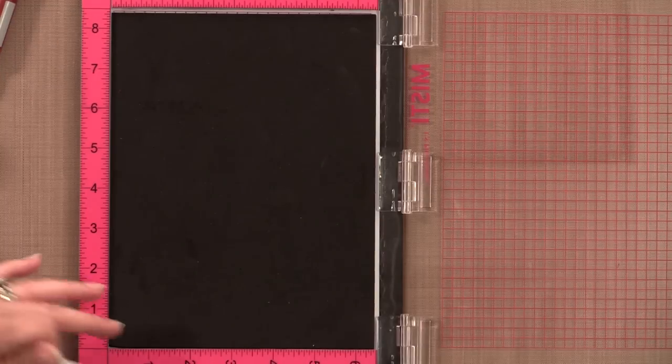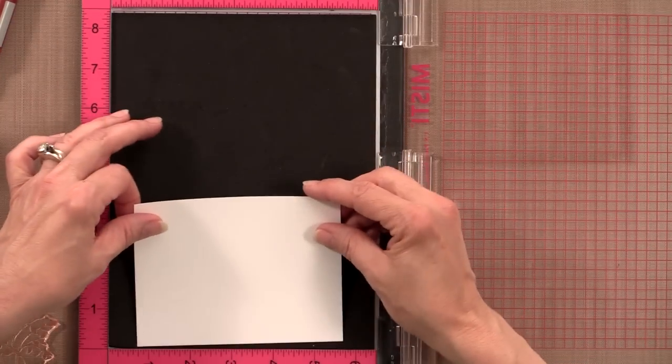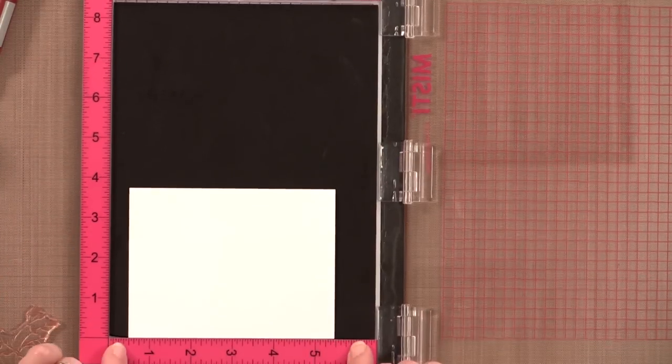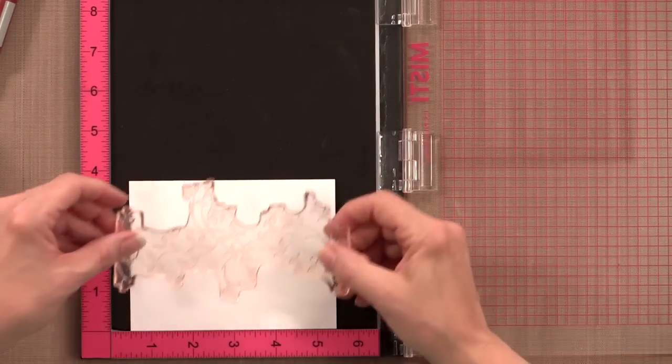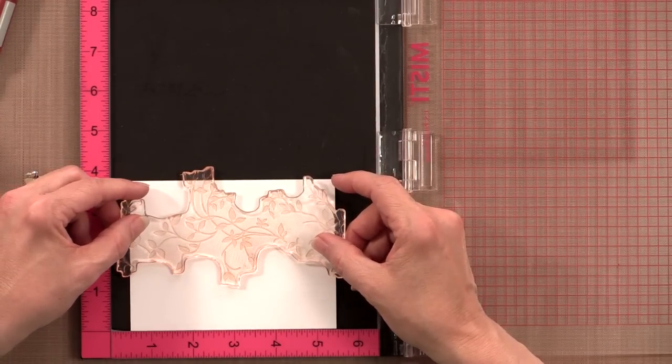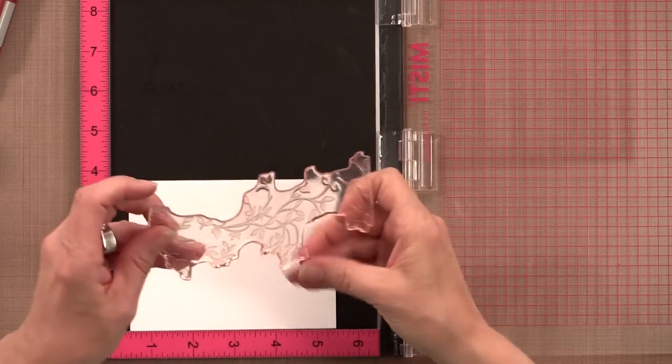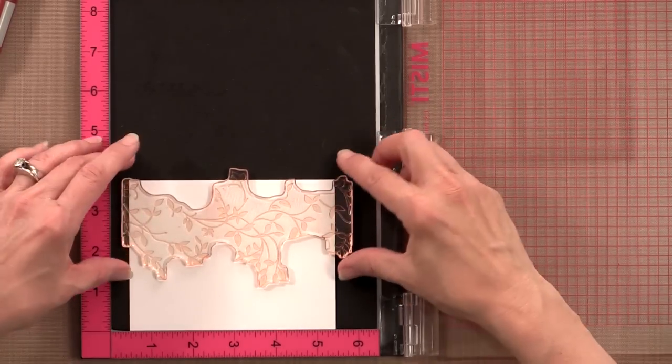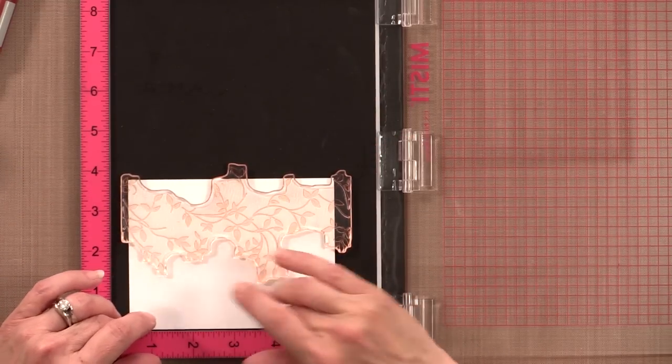And actually if you use the grid paper it'll fit the entire mat. Actually I'm not going to use it right now because I don't mind getting a little bit of ink on here. But if you're worried about that just use the piece of grid paper that came with your MISTI. Okay so I'm going to position this at about the half inch mark on the bottom. That gives me a little bit of overlap. And then I'm going to position my stamp where I want it.